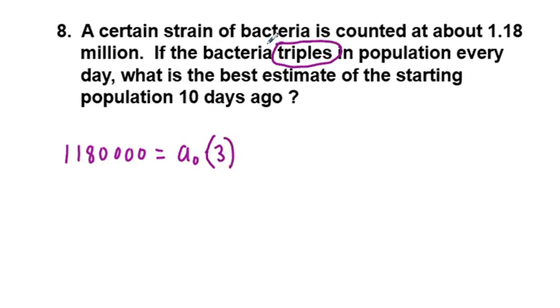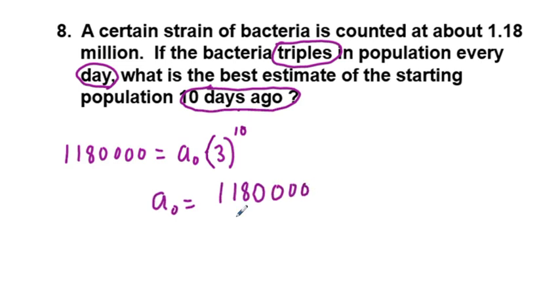And let's see, certain populations every day, we have every day and 10 days ago. So that is going to be to the power of 10. So how do we solve for a sub 0? Divide by 3 to the power of 10. So we say a sub 0 is equal to 1,180,000 divided by 3 to the power of 10.